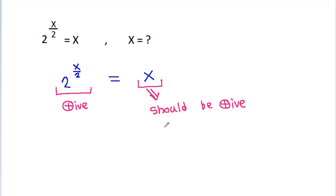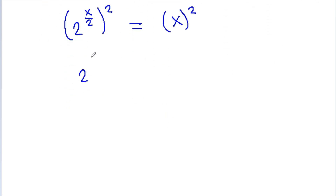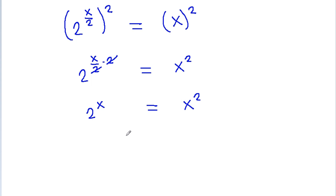That means x is positive. And now, we have 2 power x by 2 is equal to x, and if we square both sides, then it is 2 power x by 2 times 2, that is equal to x square, and 2 will get cancelled, so 2 power x it is equal to x square.